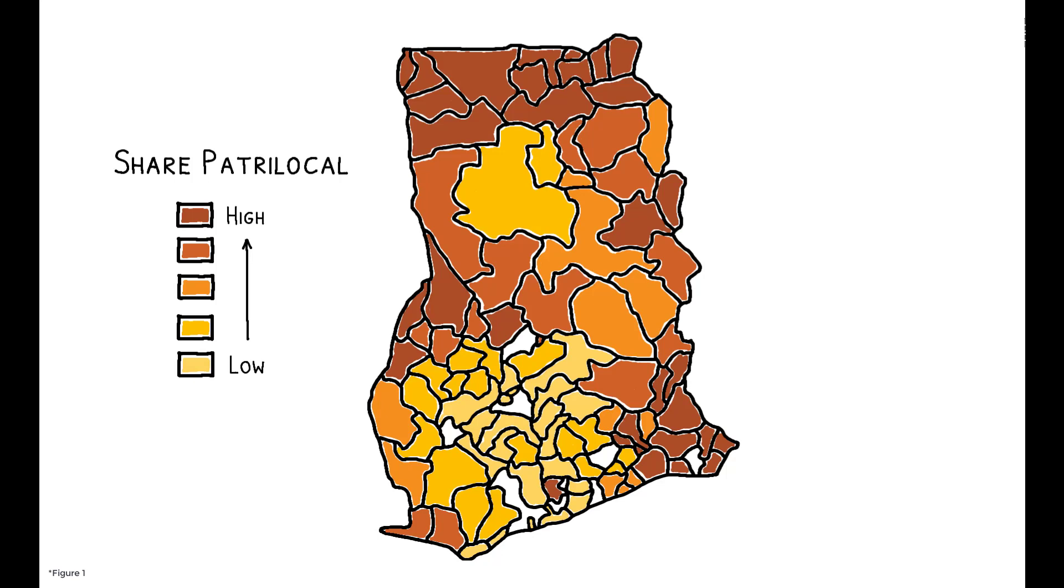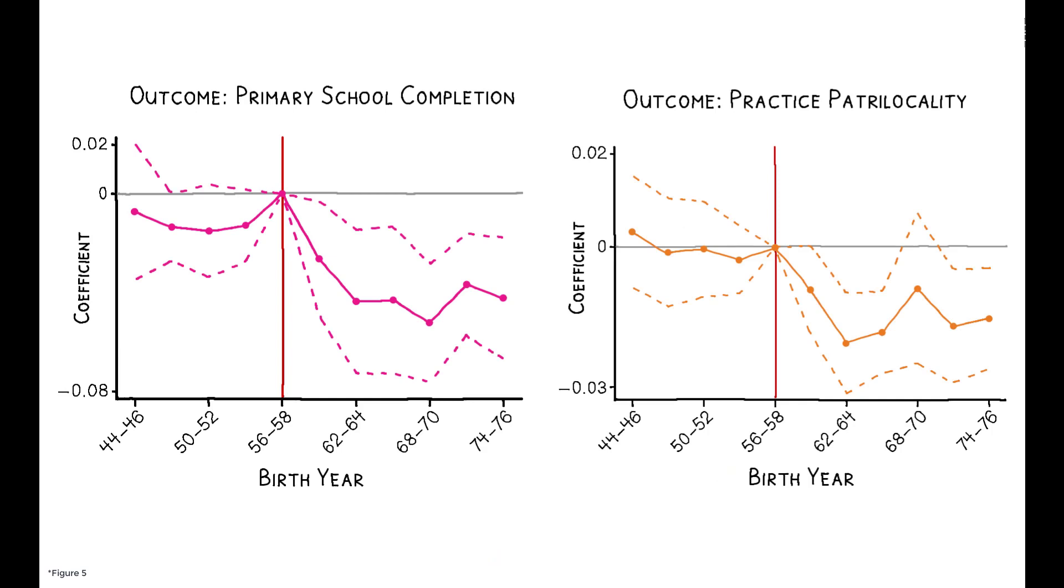Despite the substantial differences between these countries and settings, the cultural repercussions of the policy change are similar. In Ghana, sons in traditionally patrilocal groups who were young enough to be exposed to the pension plan experience a decline in both educational investment and the probability of practicing patrilocality as adults.